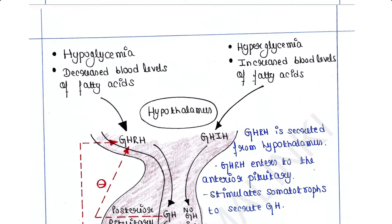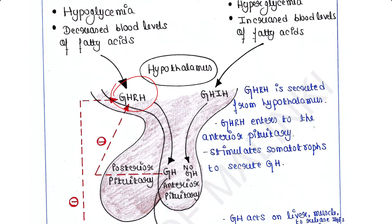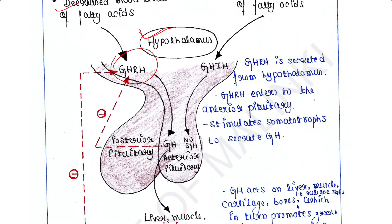GHRH is secreted from the hypothalamus. Factors that promote GHRH secretion include hypoglycemia — that is, low blood glucose concentration — and decreased blood levels of fatty acids, because both of these conditions require secretion of growth hormone. Once secreted, GHRH enters the anterior pituitary.